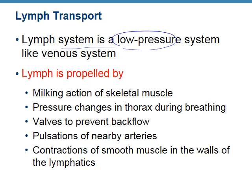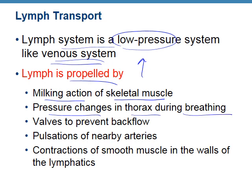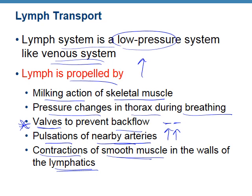The lymph system is a low pressure system, very much like the venous. To propel fluid up against gravity into the subclavian veins, there's milking action by skeletal muscles, pressure changes in the thorax during breathing, and respiratory and skeletal muscle pumps. The lymphatic system has valves that prevent backflow, just like the venous. Pulsation of nearby arteries helps push flow up against gravity, and trap-door valves prevent fluid from going back down. Smooth muscle is also present in the walls of collecting vessels, trunks, and ducts — very similar to the venous system.